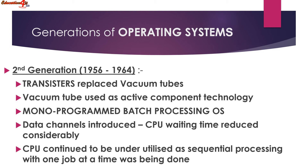The second generation began from 1956 and continued till 1964. In this generation, vacuum tubes were replaced by transistors. Monoprogrammed batch processing operating systems were developed. Data channels were introduced, through which CPU waiting time was reduced considerably. Data channels were used to read and write data concurrently. However, the CPU continued to be underutilized as sequential processing with one job at a time was still being done.